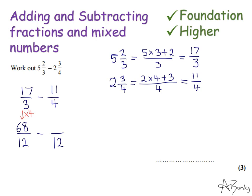And then to change the 4 into a 12, I multiplied by 3, so I'm going to do 11 times 3, which is 33. And now I do my subtraction, so I'm going to do 68 take away 33, which is 35, and that's over 12. Keep the denominator as it is.